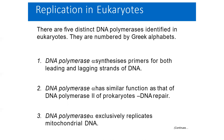However, there are some variations. There are five distinct DNA polymerases identified in eukaryotes, numbered by Greek alphabets. Number one is DNA polymerase alpha, which synthesizes primers for both the leading and lagging strands of DNA.